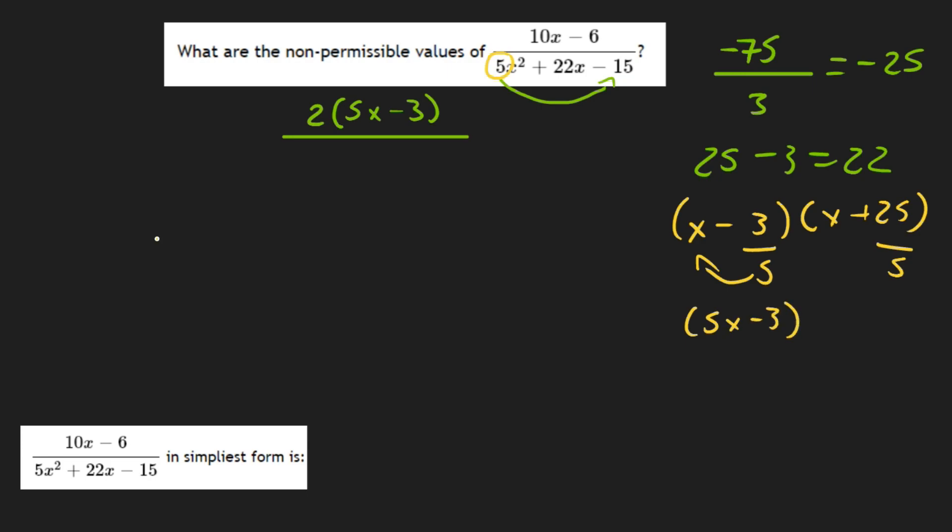5x minus 3 and x plus 5. 25 divided by 5 is 5, so we write it here: 5x minus 3.